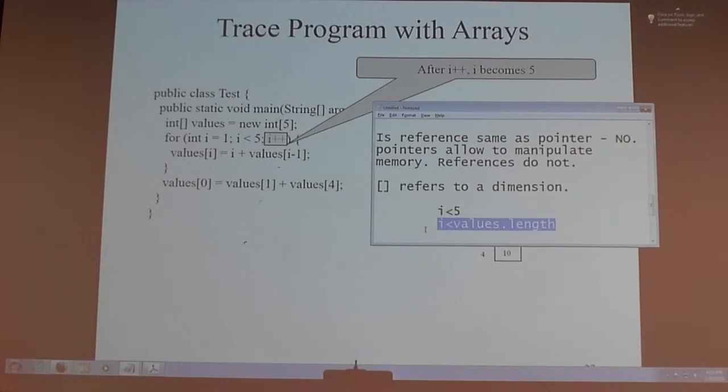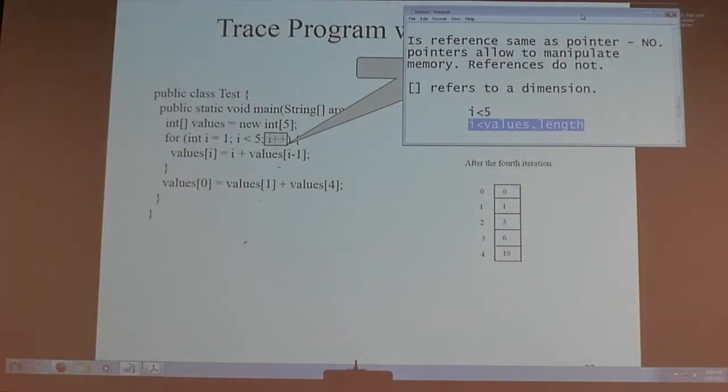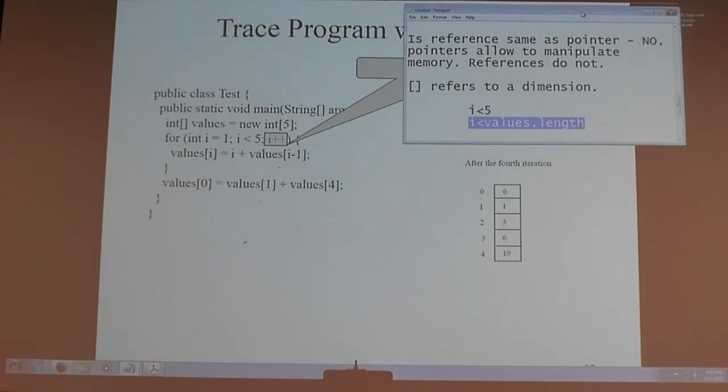So we take the value at 1, which is 1, and the value at 4, which is 10. And we plug the sum into value of 0, which becomes 11. So you'll be doing this pretty frequently. And we can improve this code a little bit. Rather than say i is less than 5, since I've declared the array of size 5, I could have said instead of i less than 5, I can replace with i is less than values dot length. We just talked about this a little bit ago. The length will return the size of the array. Questions?